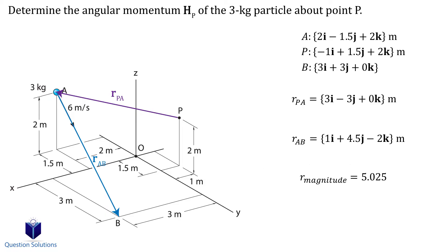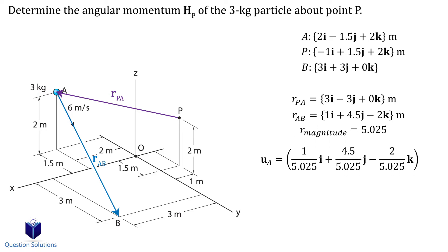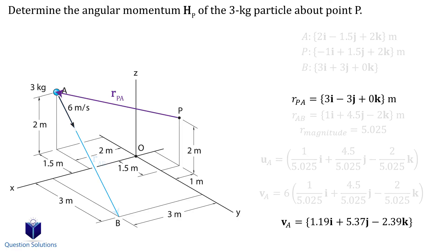Next, we divide each term in our position vector by the magnitude, which gives us the unit vector. We can finally express the velocity in Cartesian form by multiplying the unit vector by the velocity. So we're going to multiply each term by 6. Now we got our velocity expressed in Cartesian form.